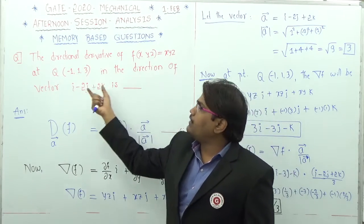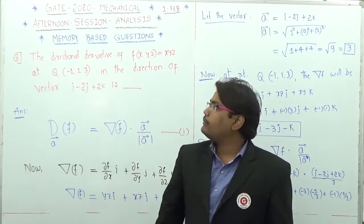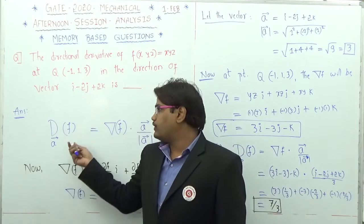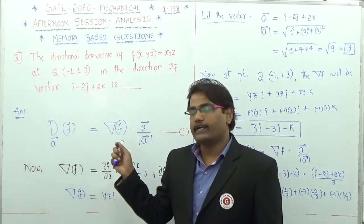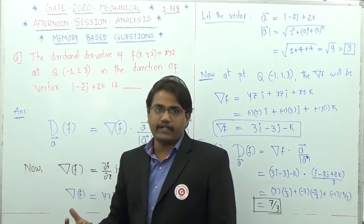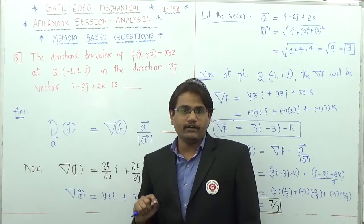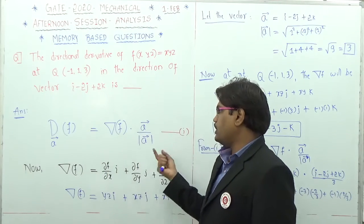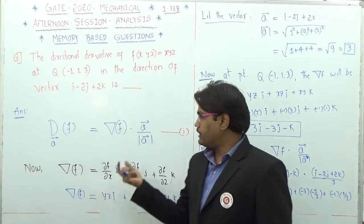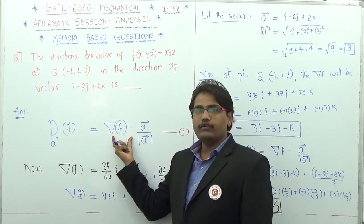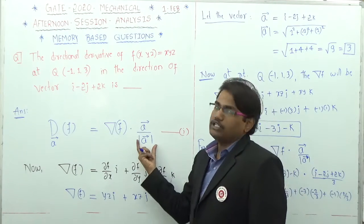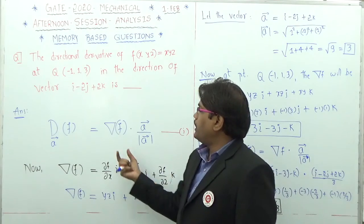Now, what is the formula to find the directional derivative of any function? The directional derivative in the direction of some vector a-bar is given by the gradient of that scalar function dot a-bar, divided by the magnitude of a-bar. It is the dot product of the gradient of the function and the vector divided by its magnitude.